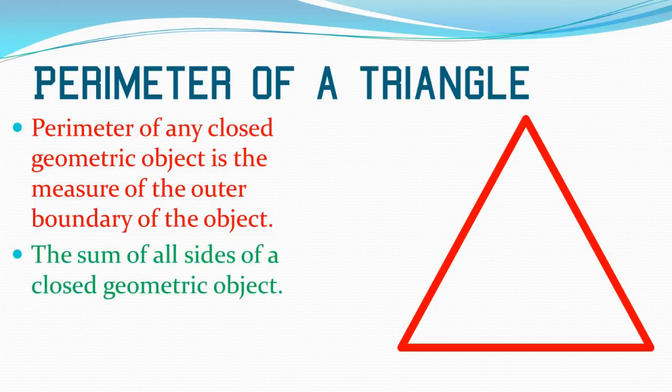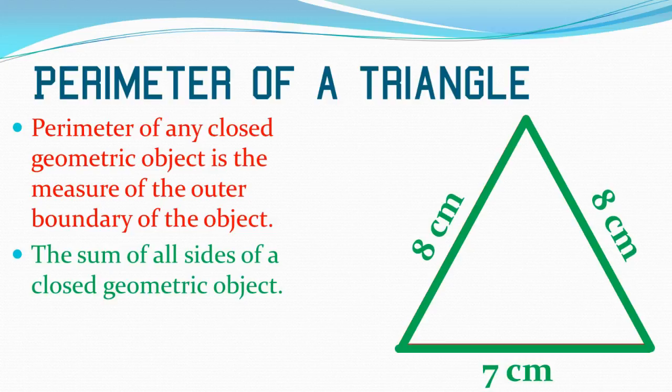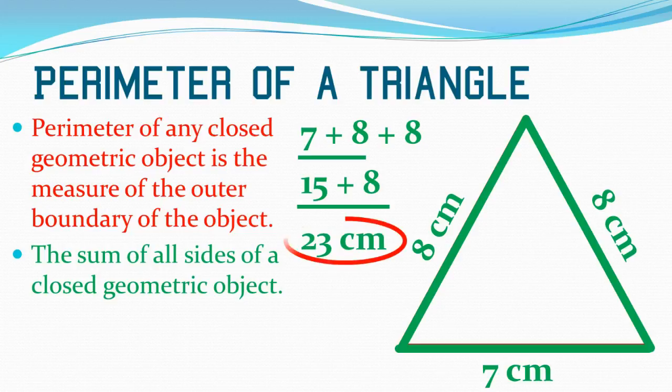You can also think of the perimeter as the sum of all sides of a closed geometric object. In most mathematical cases, this is what we're asking for, the measurement of this outer boundary. So if I add all these up, 7 plus 8 is 15, 15 plus 8 is 23 centimeters.